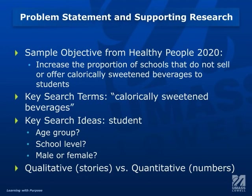For this video we're going to talk about how to identify the terms and how to search for them. So let's start with my sample objective: to increase the proportion of schools that do not sell or offer calorically sweetened beverages to students. Step two, after you have this objective, is to identify the key ideas. These are the words or phrases that will help us find the articles that can be used to support what we make our problem statement.